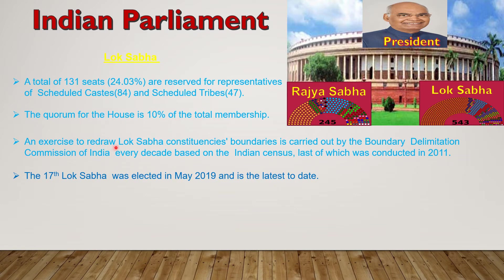There is an exercise to redraw Lok Sabha constituencies. Constituencies means the election area from where the member of Lok Sabha is elected. The boundary of constituencies is redrawn by the Delimitation Commission of India after every 10 years when the census is conducted. Last time it took place in 2011 because the last census was conducted in 2011. The 17th Lok Sabha was elected in May 2019.